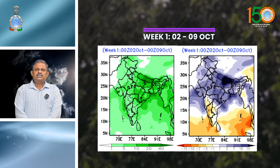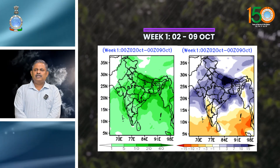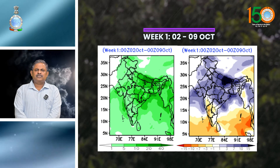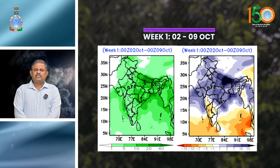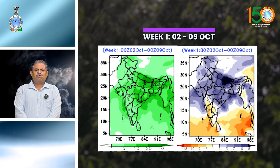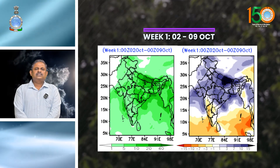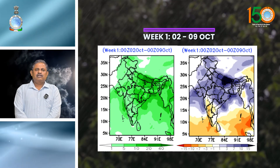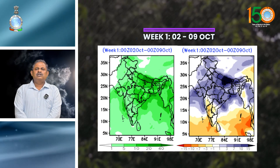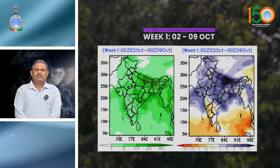Due to this system, along with the confluence of winds and high moisture availability, there is a possibility of heavy to very heavy precipitation with hailstorms over northwest India during the same period, with peak intensity on 6th October. Conditions are not favorable for further withdrawal of the southwest monsoon from the remaining parts of the country during this week.